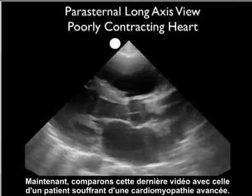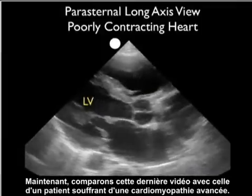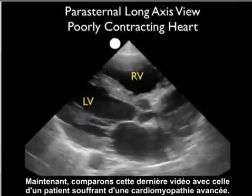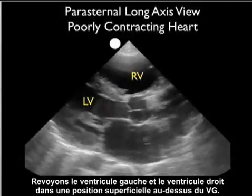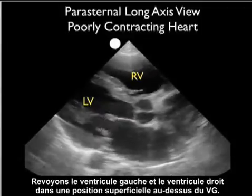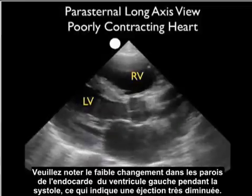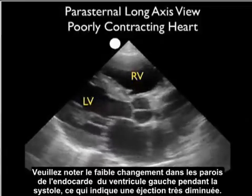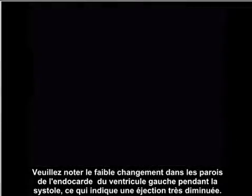Now let's contrast that last video clip with this one taken from a patient with an advanced cardiomyopathy. We recall the left ventricle and the right ventricle in a superficial location above the LV. Notice the very poor percentage change of the endocardial walls of the left ventricle during systole, indicating a very decreased ejection fraction.